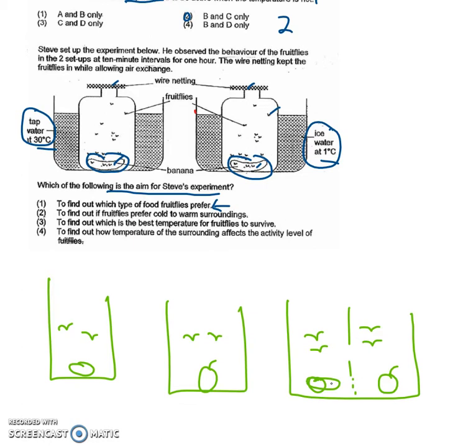This one will be to test whether the fruit flies prefer fruit A, which is a banana, or fruit B, which is an apple.